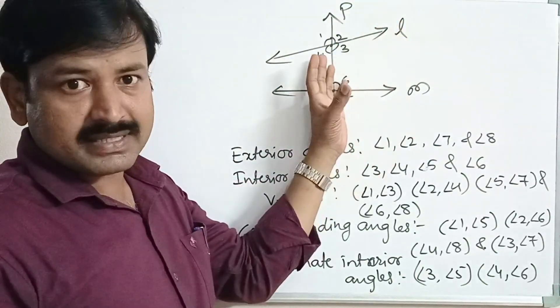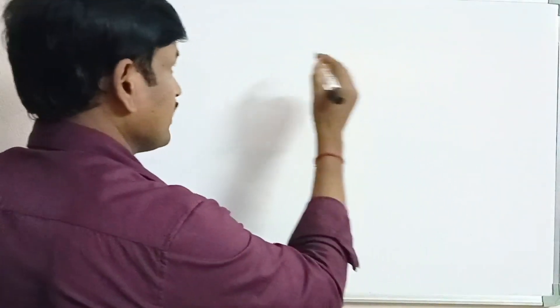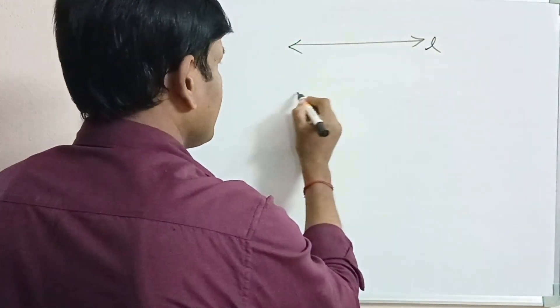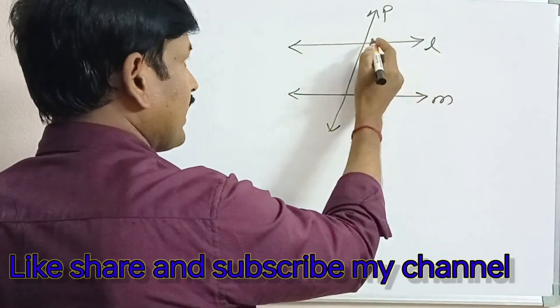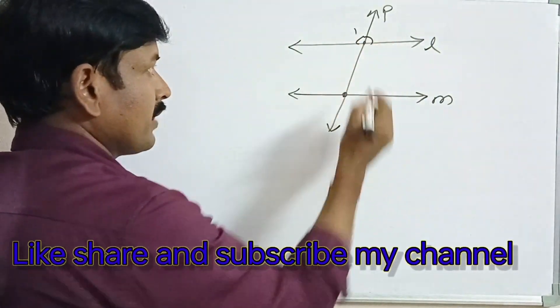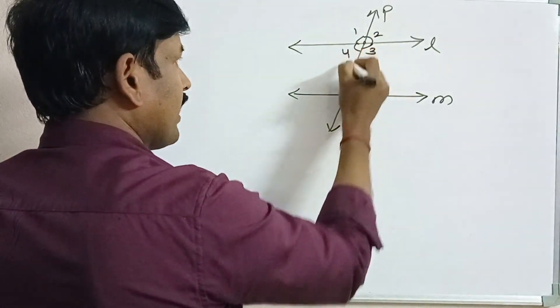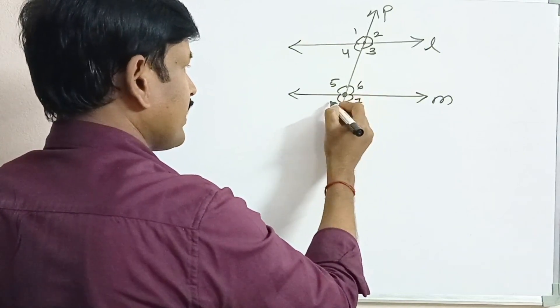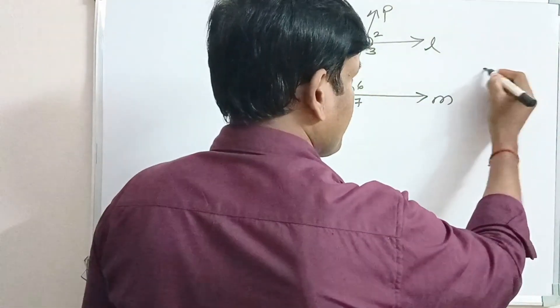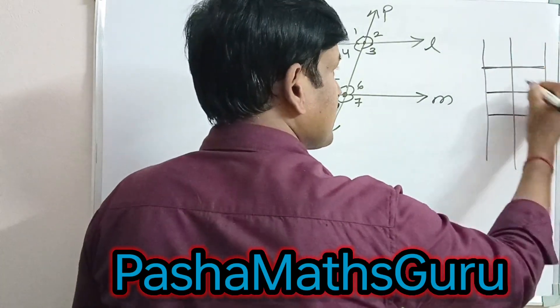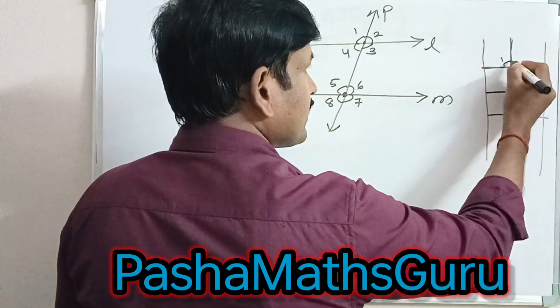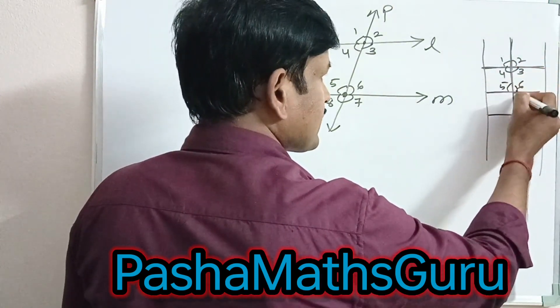What happens to these angles when the given two lines are parallel? If a pair of parallel lines are intersected by a transversal, let us observe the angles. Here, line L and M are parallel lines, and P is a transversal. Let us observe a window or a graph paper — here it is a transversal and these two parallel lines are intersected by a transversal, forming angles 1 through 8.